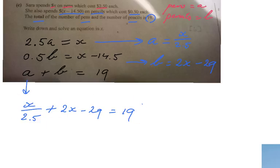How do I solve it? First of all, there are different ways of doing it. I personally just want to get rid of that fraction, so I times everything by 2.5. Please solve it the way you want to solve it. I times everything by 2.5, so that becomes X. 2.5 times 2 is 5X minus 29 times 2.5 is minus 72.5, and that's going to be 47.5.